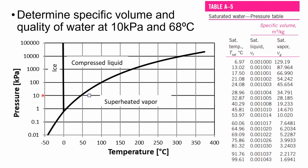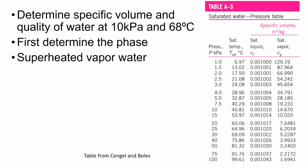At 10 kilopascal and 68 degrees, it falls in the superheated vapor region. If you do not have the graph with you, you can always use the saturated water pressure table. At 10 kilopascal, the saturation temperature is 45.81 degrees Celsius. The question tells us that the water is at 68 degrees, meaning it is higher than the saturation temperature. Thus, it is in the superheated vapor region.